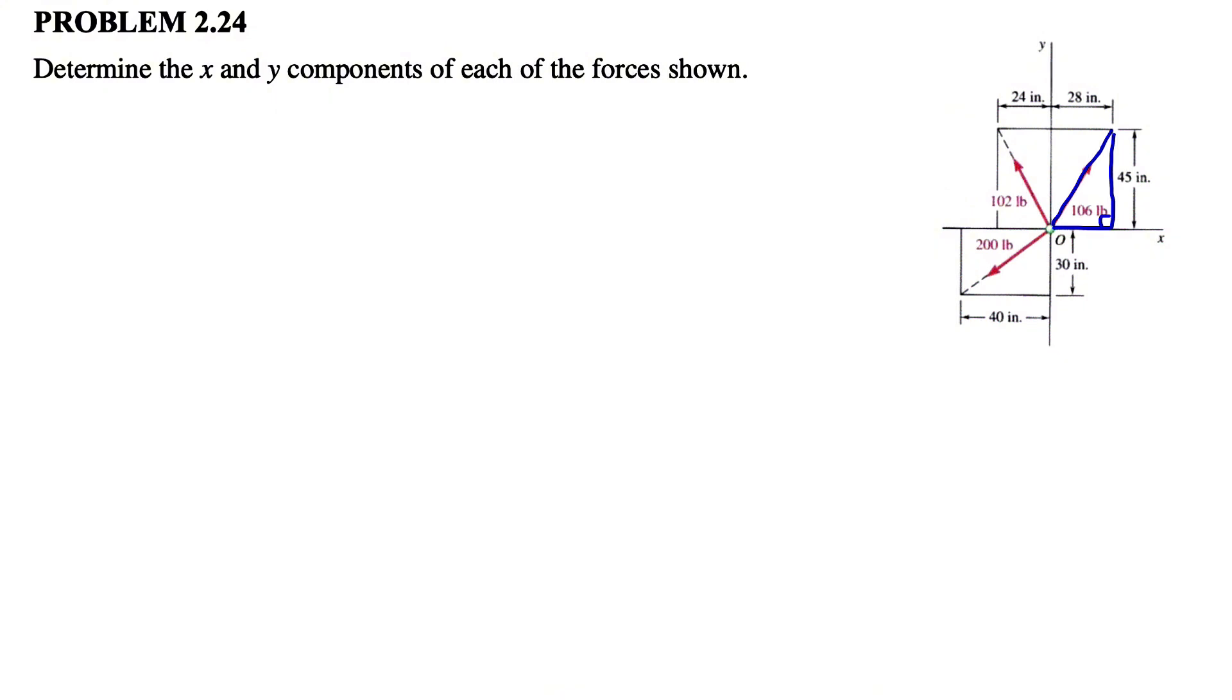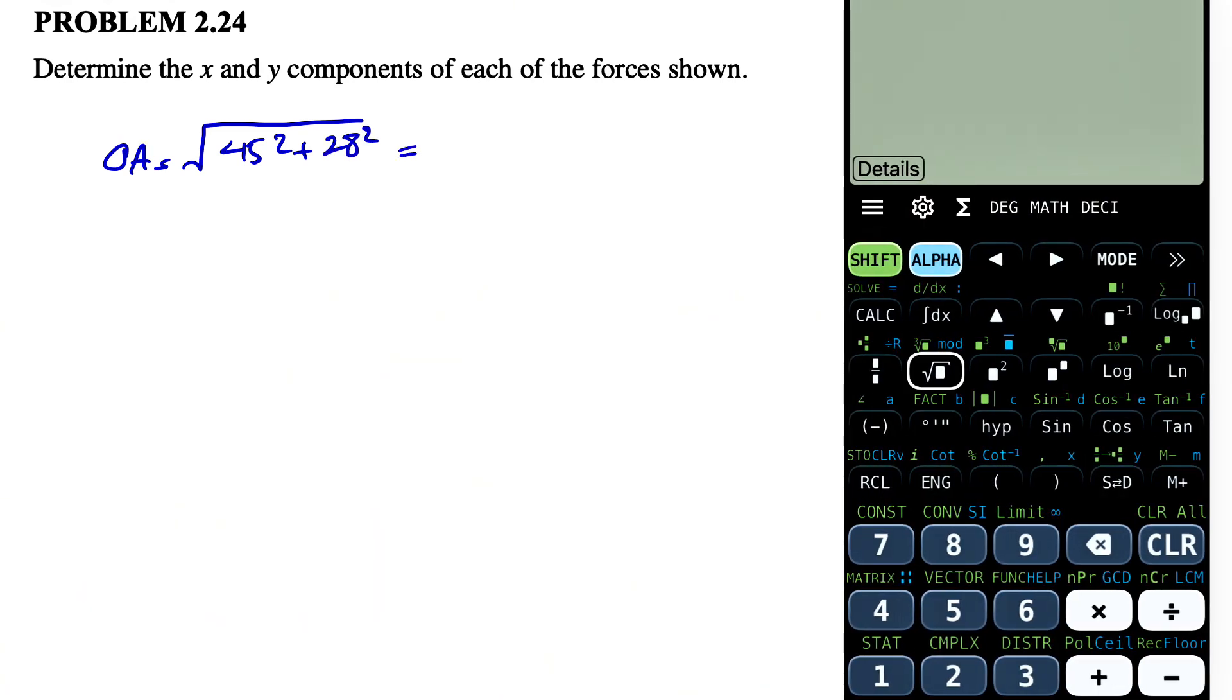If you look at this right triangle in here, we have one base 28, the other side is 45. So if you do the Pythagorean theorem, we can find the hypotenuse of this force pretty easily. Let's call this point A. So OA would be basically the square root of 45 squared plus 28 squared. And if we calculate this, we have the square root of 45 squared plus 28 squared, which is going to be 53.